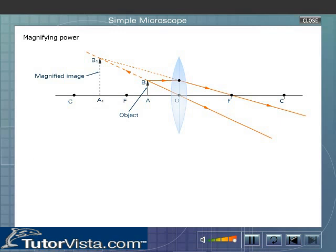From this equation, it is obvious that to increase the magnifying power of a simple microscope or magnifying glass, the focal length of the convex lens should be made as small as possible.